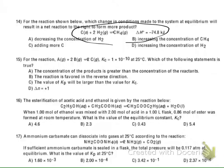Here you have carbon as a solid, so you can ignore that. By adding or removing carbon solid, it will not affect chemical equilibrium. Hydrogen is a gas and methane is a gas, so you can manipulate those two terms.